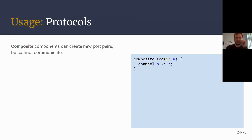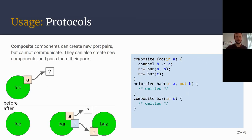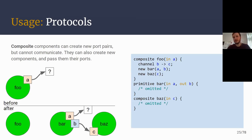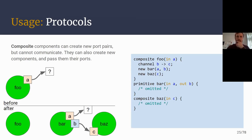The other kind of component you can define is the composite component, which allows you to do structural things such as creating new channels. More importantly, you can create other components within a composite component, moving your ports into them. The idea is that composite components describe behavior that is the composition of other components. In this example, foo takes in port A, creates two new ports connected by a channel with ports B and C, and then instantiates two new components moving their ports there.